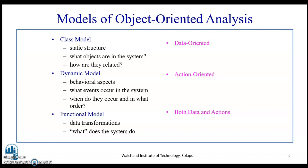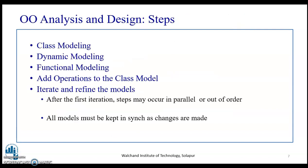We then answer the question: what does the system do? The OO analysis and design steps consist of class modeling, dynamic modeling, functional modeling, and then adding operations to the class model.